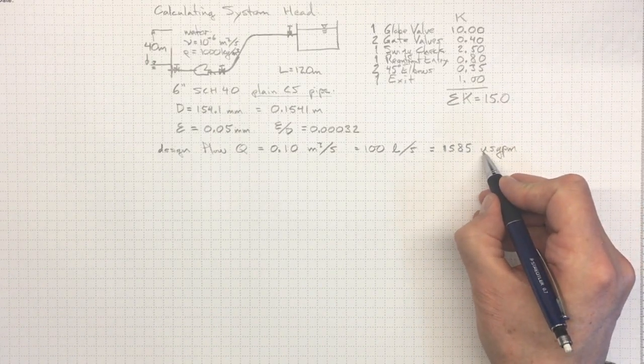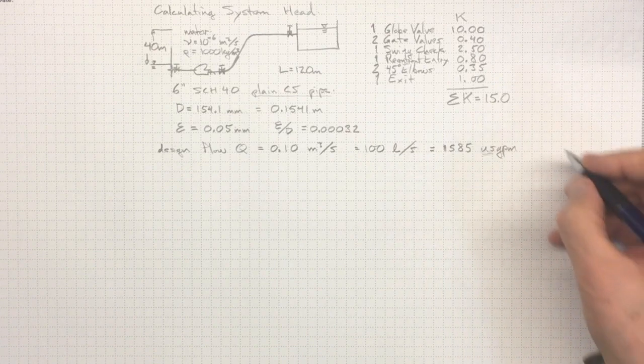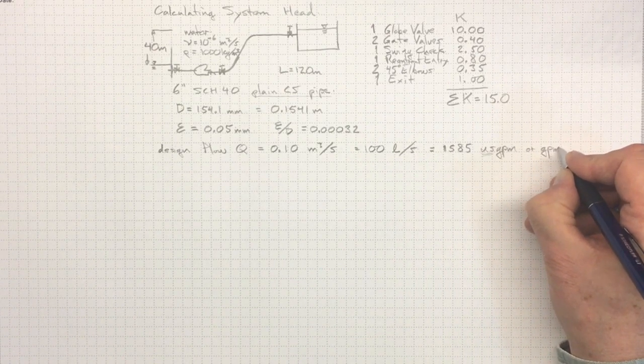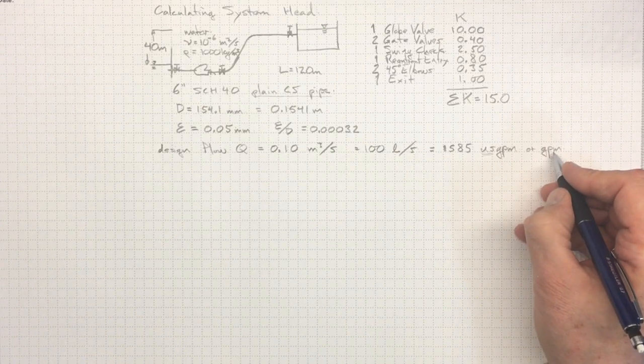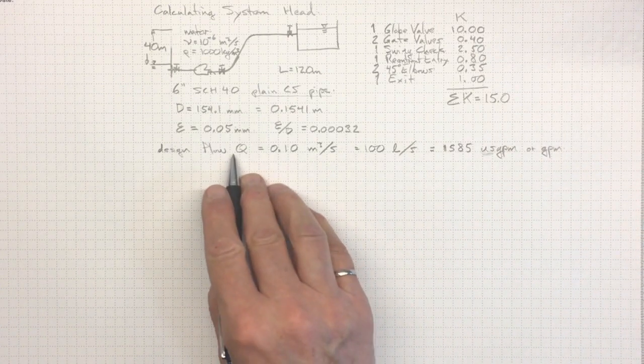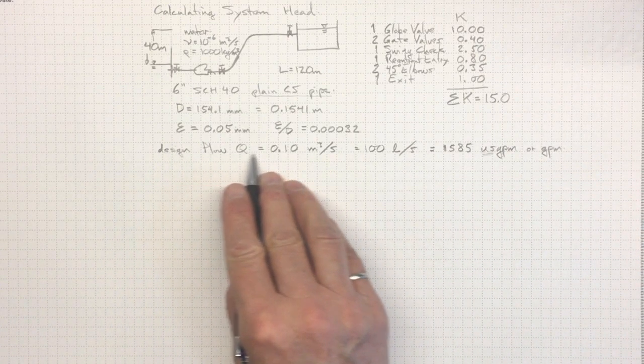Now, I'm going to try always to write U.S. gallons per minute. But, very often, you'll see just simply gallons per minute on the assumption that we're talking about U.S. gallons and not imperial gallons.